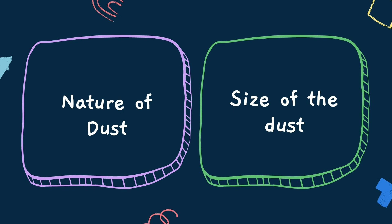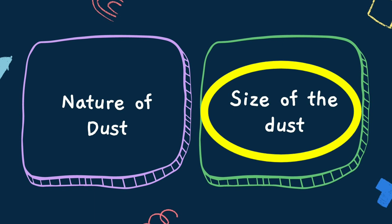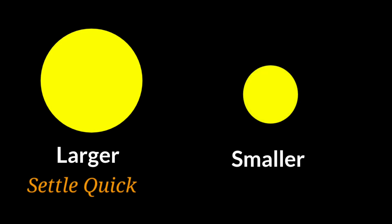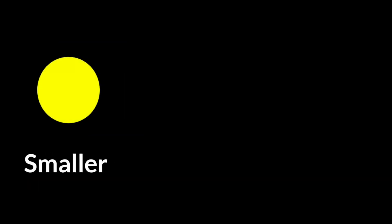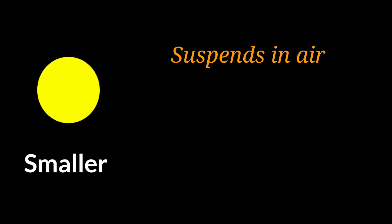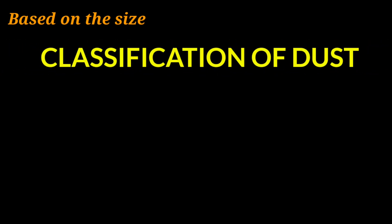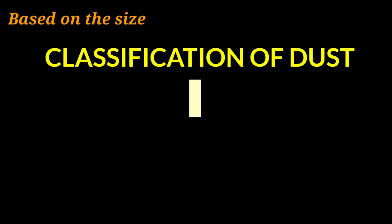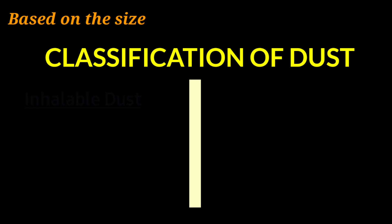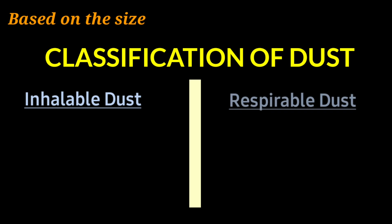The behavior and effect of dust particles on the human respiratory system depends upon the nature and the size of the dust particle. More importantly, we must pay attention to the size: larger particles settle quickly, while smaller dust particles remain suspended in air for a long time. These small particles enter our human respiratory system and cause many respiratory diseases.